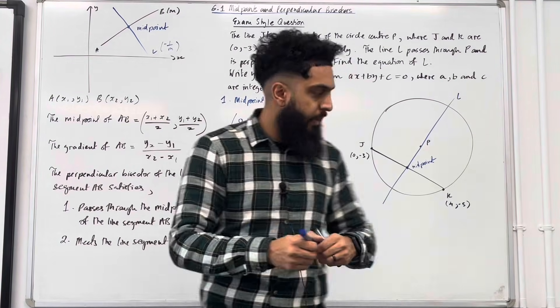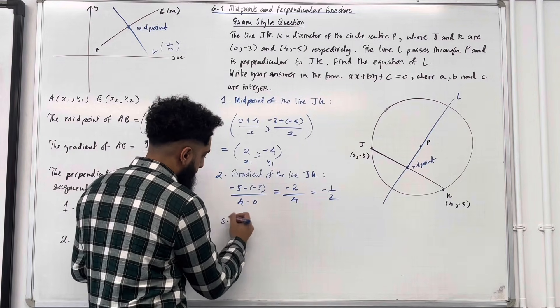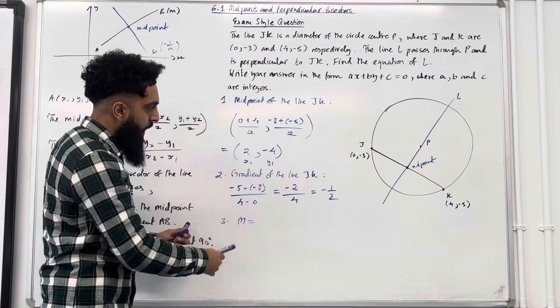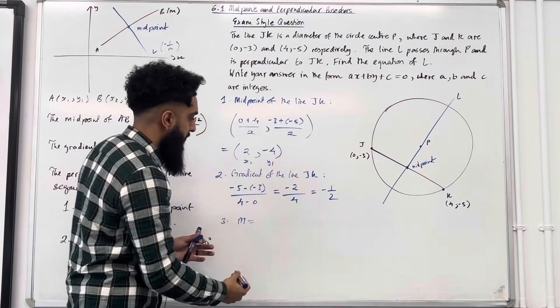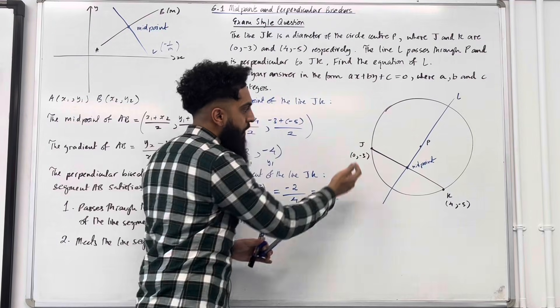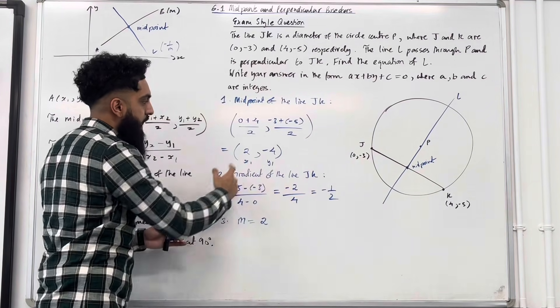In step number three, M, the gradient of the line L is the negative reciprocal of minus 1 over 2, which is just 2. And we know that the line L passes through the midpoint of the line JK, and that midpoint was calculated over here.